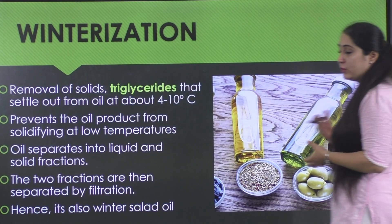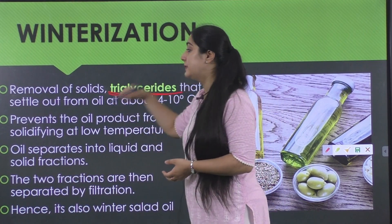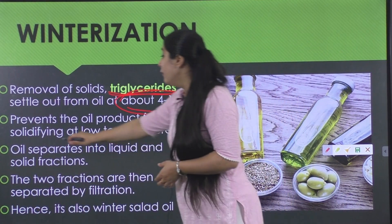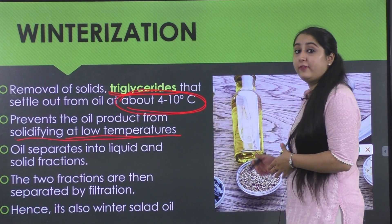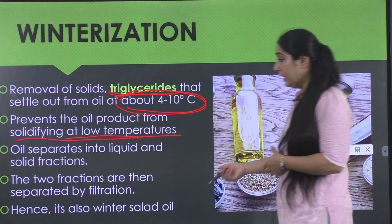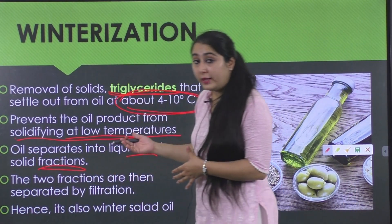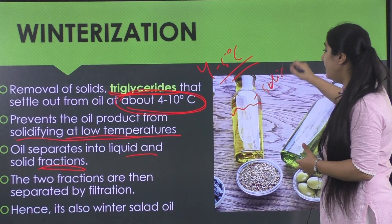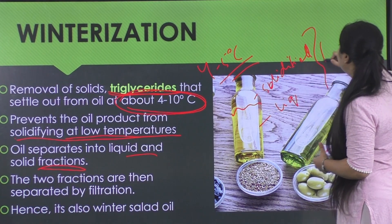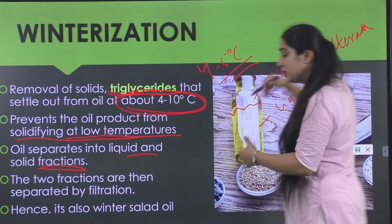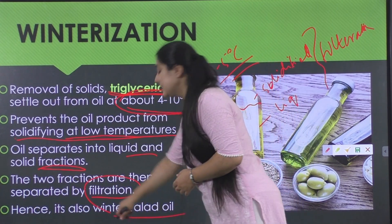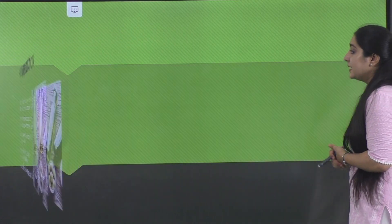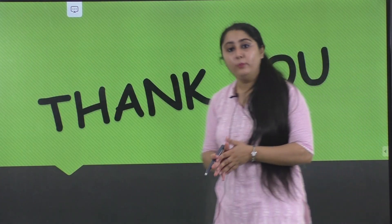The winterization process removes triglycerides that would cause the oil to solidify at low temperatures. The oil is stored at around 4 to 10 degrees Celsius, causing it to separate into a solid fraction and a liquid fraction. These two fractions are easily separated by filtration, and the resulting oil is also called winter salad oil because it will not solidify at lower temperatures. With this, we conclude the oil extraction and refining process. Thank you.